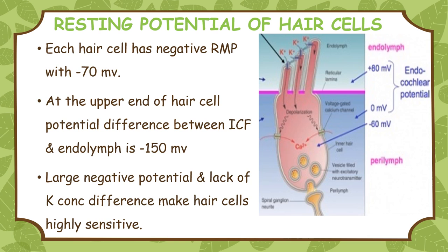Resting membrane potential of the hair cells: each hair cell has a negative resting membrane potential; the intracellular fluid is at a potential of minus 70 millivolts with respect to the perilymph of the scala tympani. At the upper end of the hair cell, the potential difference between the intracellular fluid and the endolymph is around minus 150 millivolts (that is, minus 70 minus plus 80 equals minus 150 millivolts). There is not much difference between potassium concentration of the endolymph and the intracellular fluid. The large negative potential and the lack of potassium concentration difference makes these cells very sensitive, so any slightest movement of the hair cells stimulates them.